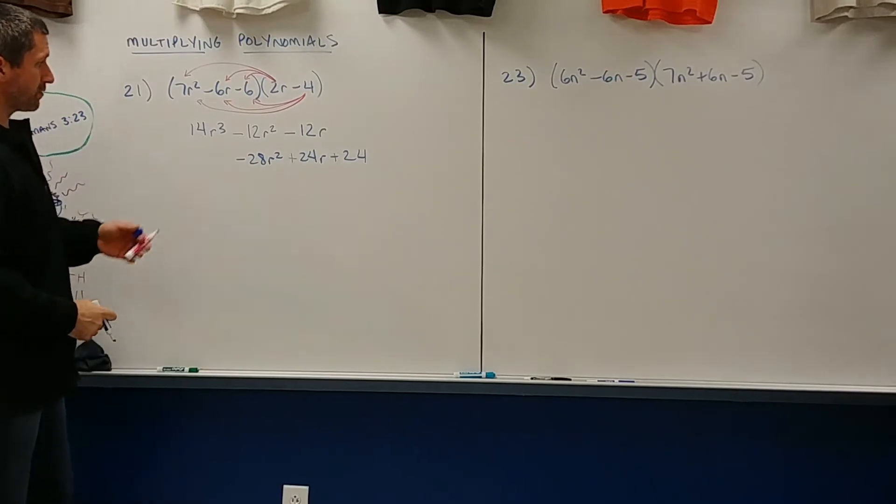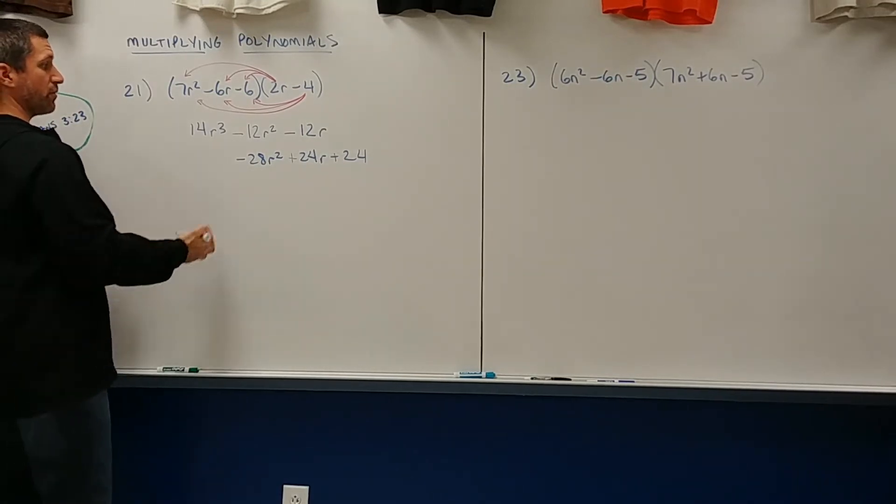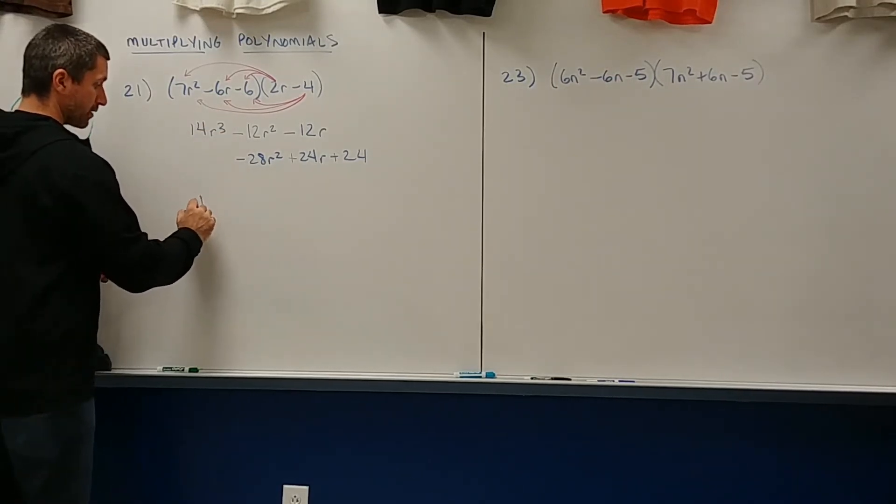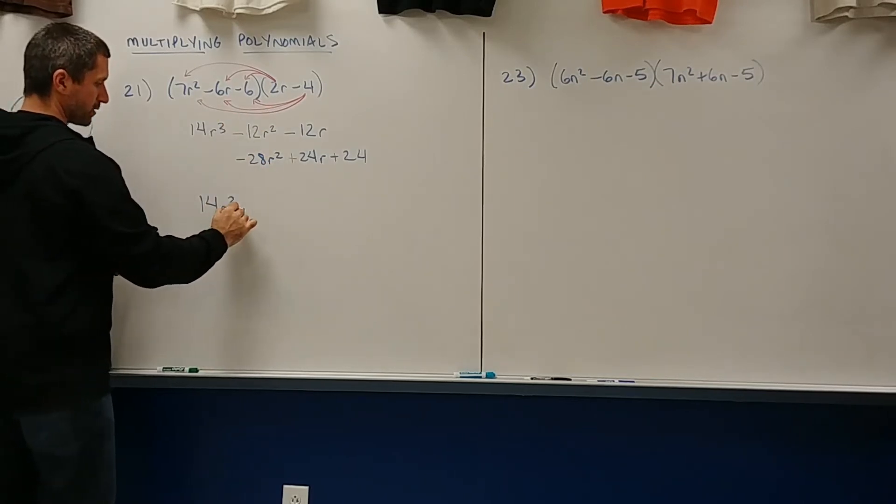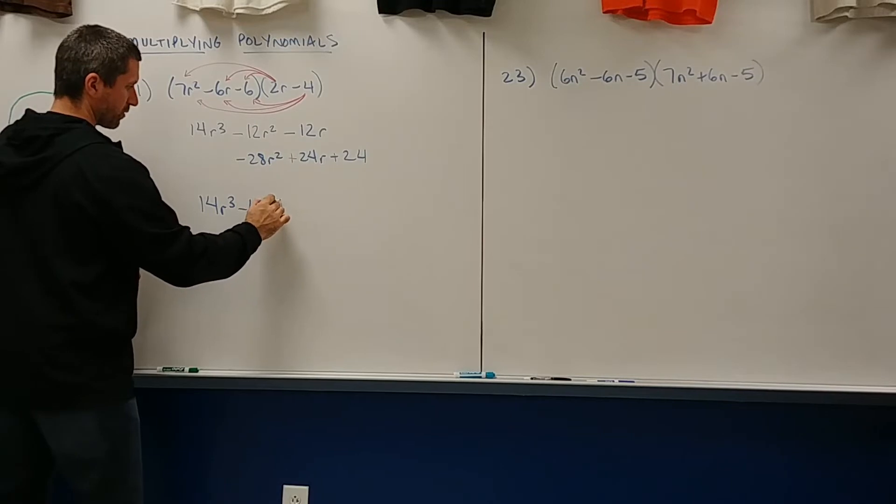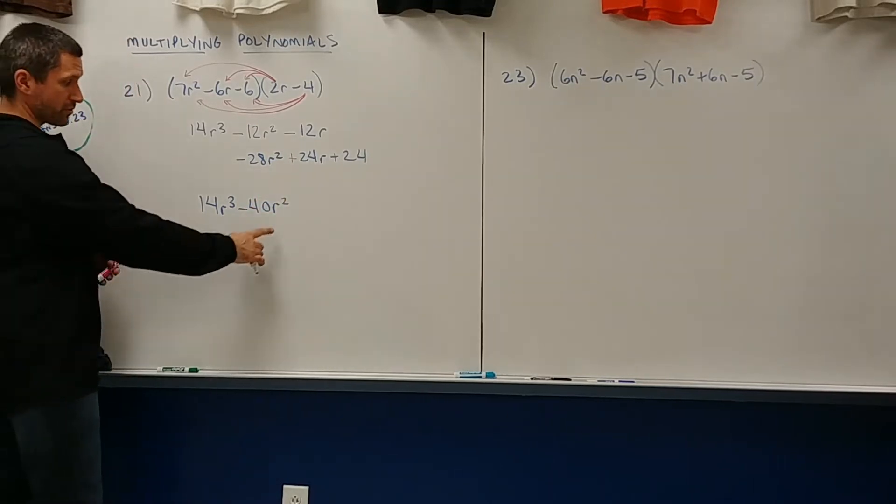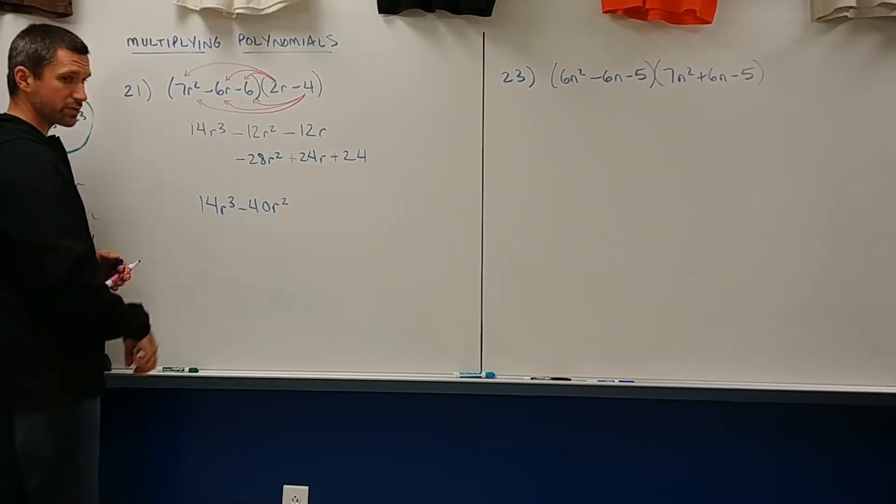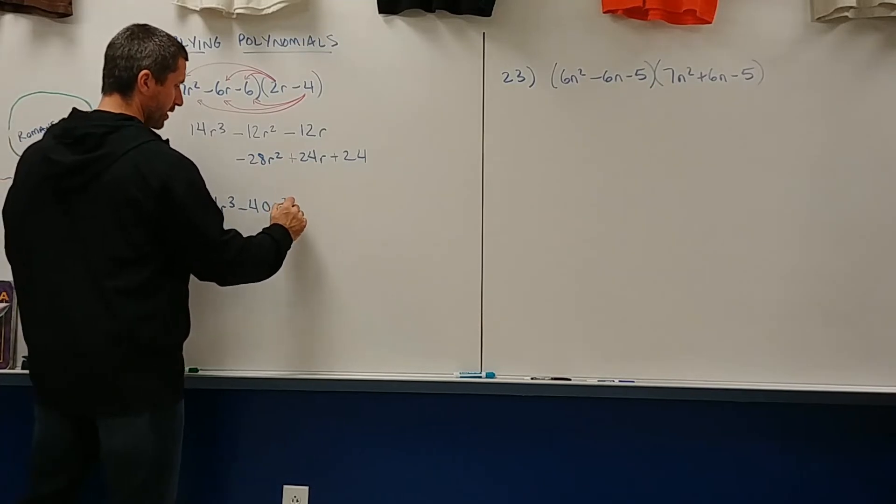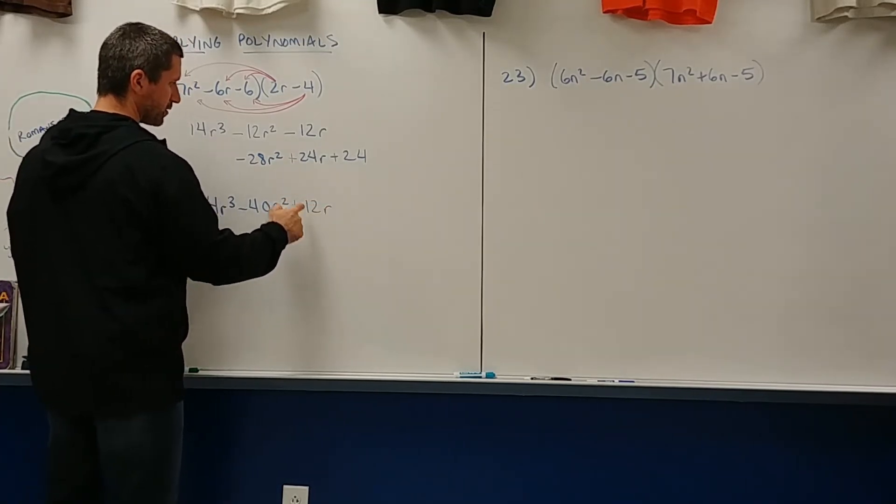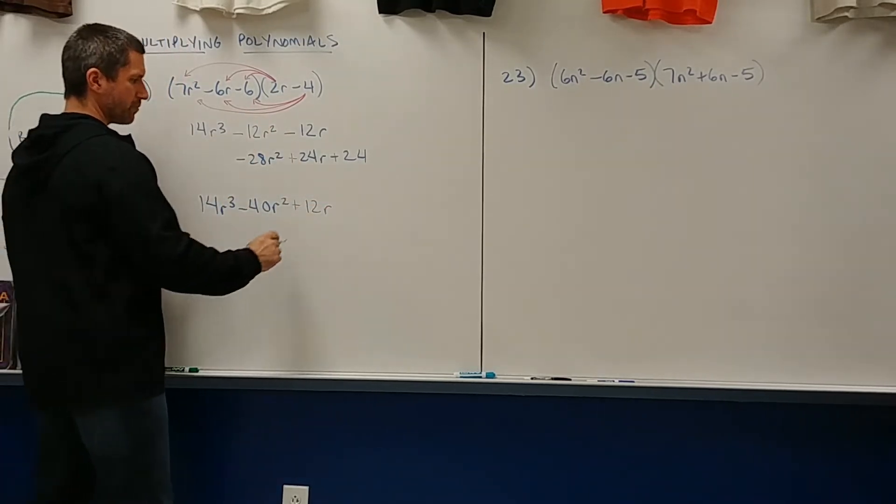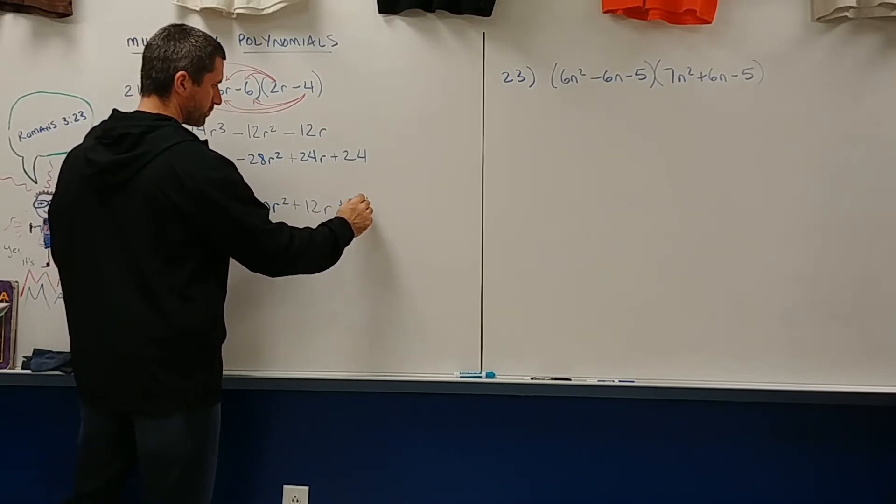He has no like term. Neither does the 14R cubed. So when you add these together, you're gonna keep the 14R cubed. You're gonna combine these two, which is negative 40R squared. When you add like terms, you don't change the degree. You just add the coefficients. Over here, you're gonna add those together. You get 12R. That's 24 minus 12. And then plus 24.